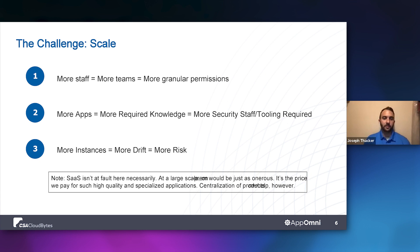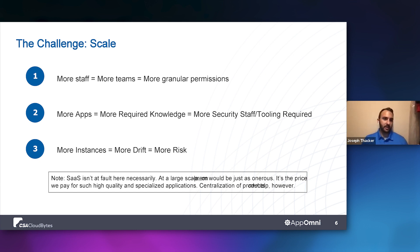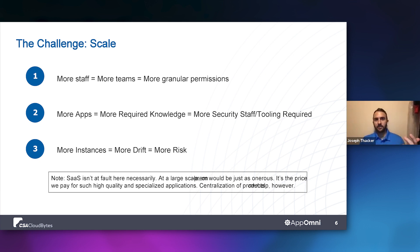Absolutely. As companies grow and reach the scale of an enterprise, the number of teams is significant, and each needs their own permission sets, which then has to be propagated across multiple SaaS apps. Most enterprises are using at least 50 SaaS applications. The idea that a small team — even just a handful of people — could wrap their minds around both the security settings, the third-party integrations, and the granular roles and permissions for 50 applications is just absurd. I think that's why SSPM has blown up as a market and why the founders at AppOmni started this organization.